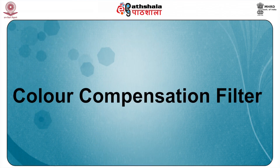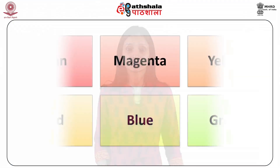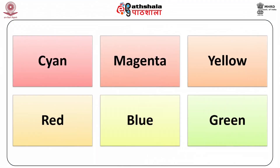Next is the color compensation filter, used to make adjustments to the red, blue, or green characteristics of light. These are applied in correcting for color balance, light source variations, different emulsions, film batches, and other color effects. They are available in density variations of cyan, magenta, yellow, as well as red, blue, and green filters.